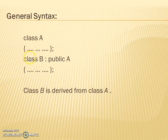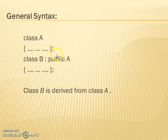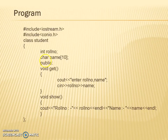Now the general syntax of single inheritance: we create class A as the base class, and class B is a derived class from class A, where we put a visibility mode of public so that all member functions of class A can be accessed easily in class B, the derived class.